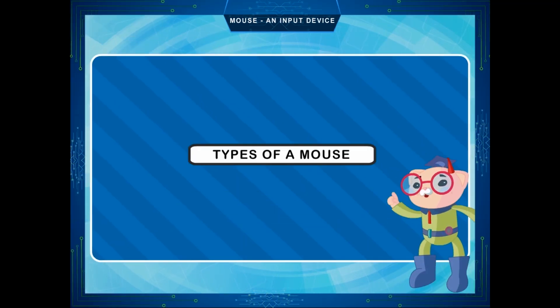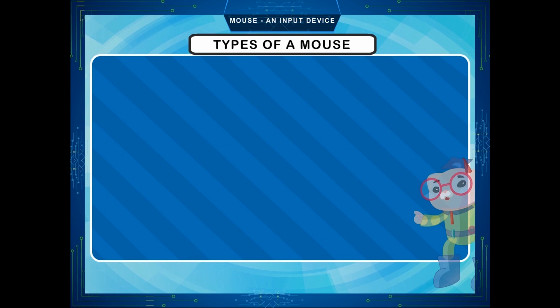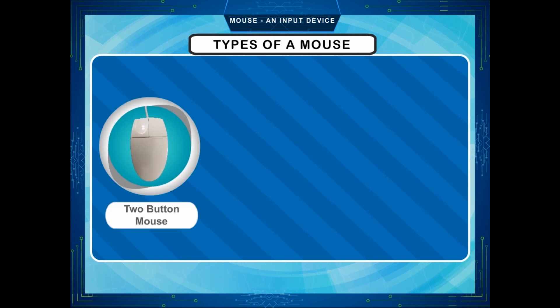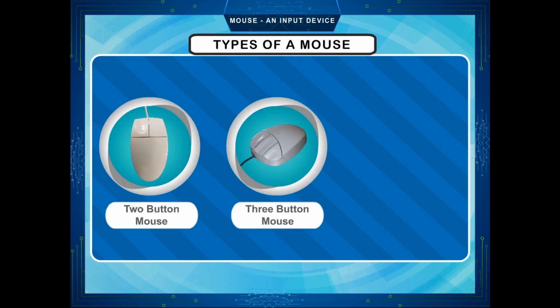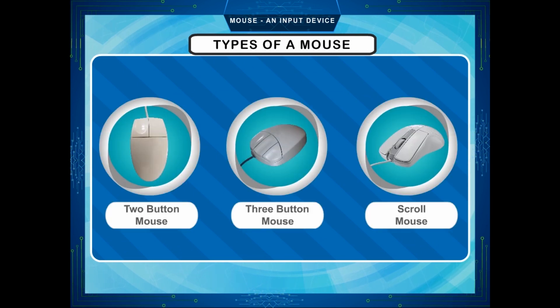Types of a mouse: two button mouse, three button mouse, and scroll mouse.